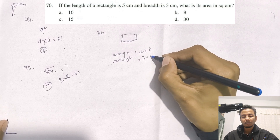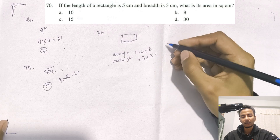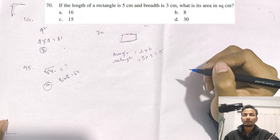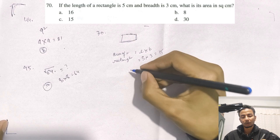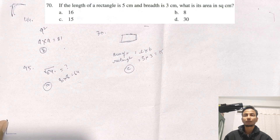The length of the rectangle is 5 and the breadth is 3. So the area is 5 times 3 equals 15. The correct answer is C for question 70.